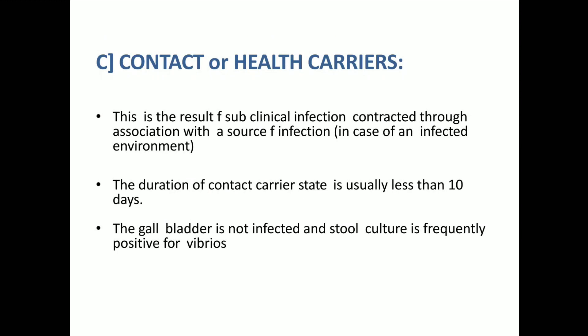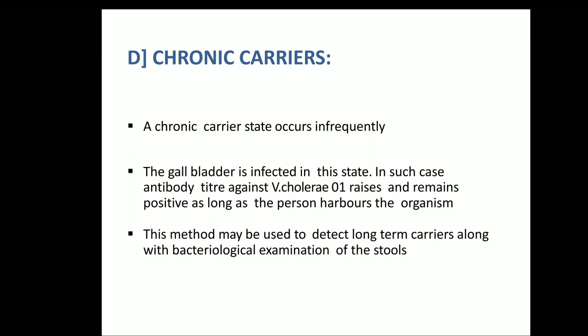The third type is contact or healthy carriers: this results from subclinical infection contracted through association with a source of infection. The duration of the contact carrier state is usually less than 10 days. The gallbladder is not infected and stool culture is frequently positive for Vibrios. The fourth type is the chronic carrier state, which occurs infrequently. In this state, the gallbladder is infected. The antibody titer against Vibrio cholerae O1 rises and remains positive as long as the person is harboring the organism.